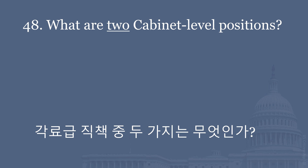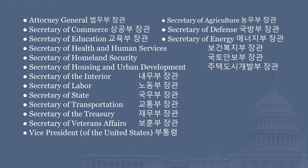What are two Cabinet-level positions? Attorney General. Secretary of Agriculture. Secretary of Commerce. Secretary of Defense. Secretary of Education. Secretary of Energy. Secretary of Health and Human Services. Secretary of Homeland Security. Secretary of Housing and Urban Development. Secretary of the Interior. Secretary of Labor. Secretary of State. Secretary of Transportation. Secretary of the Treasury. Secretary of Veterans Affairs. Vice President of the United States.